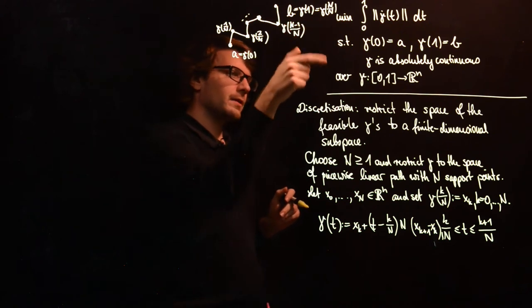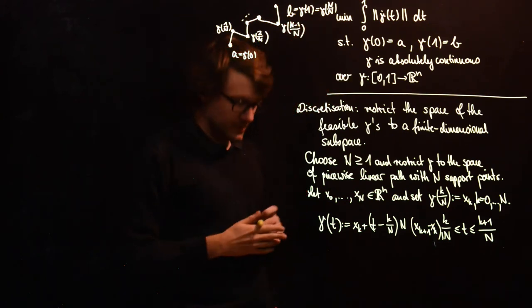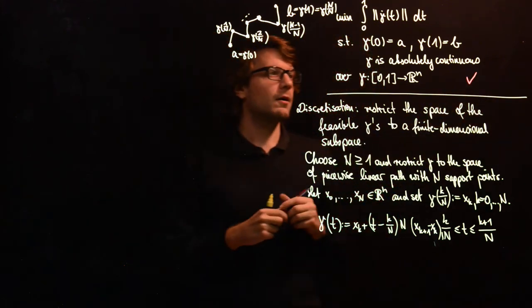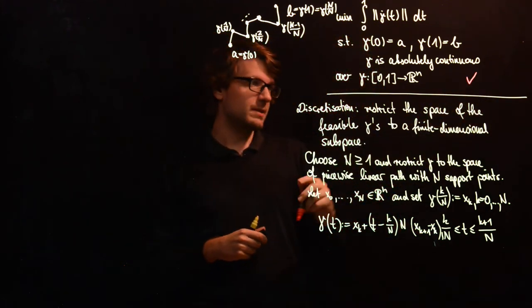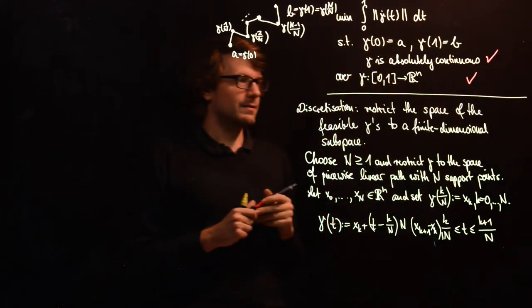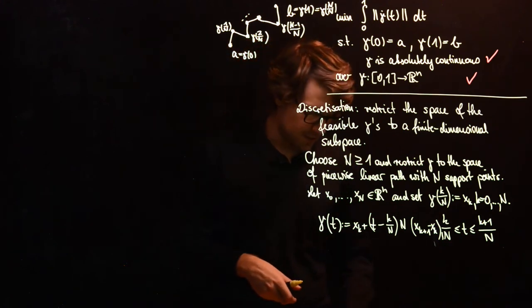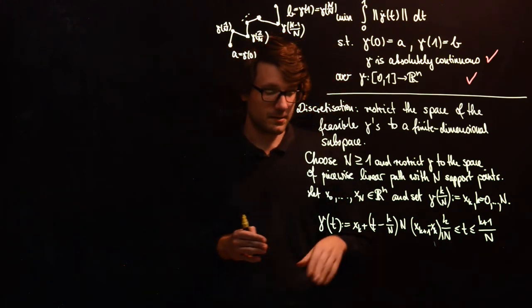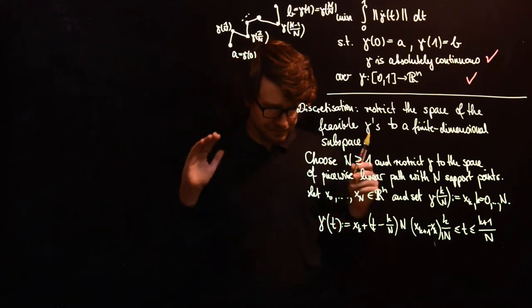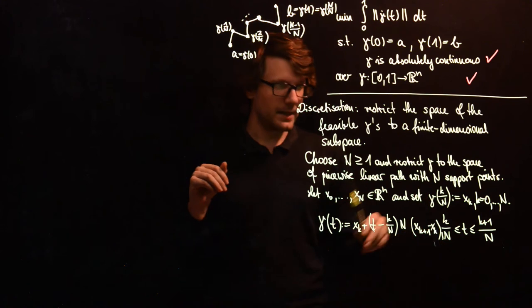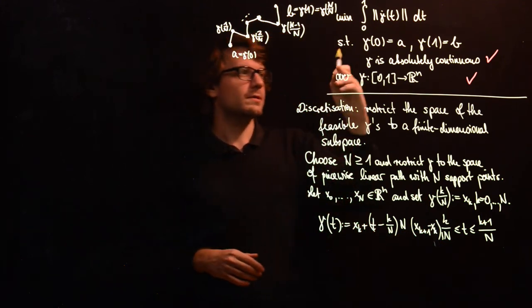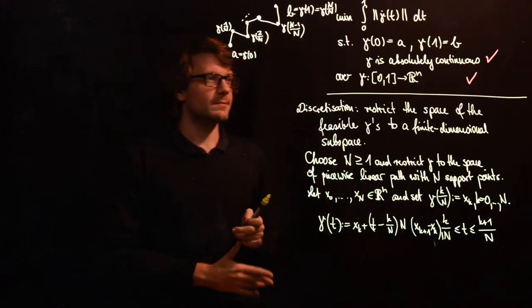So we have seen how to replace this. Now for these piecewise linear curves, absolute continuity is automatic. As I mentioned, absolute continuity means that you can take the derivative and integrate, and then you will get the total length of the curve, and this will be guaranteed for all piecewise linear curves here.